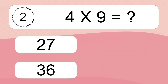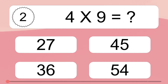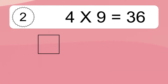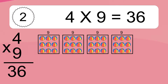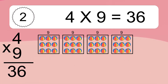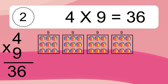4 times 9 equals what? 4 times 9 equals 36. We have 4 boxes, and each box has 9 colorful balls inside. If you count all the balls in all the boxes together, you will have 4 times 9 balls. This equals 36 balls.